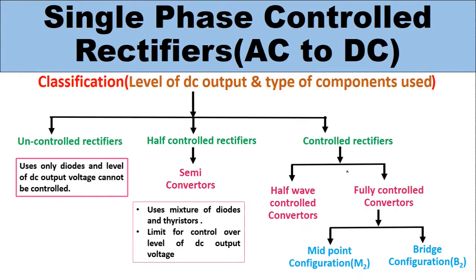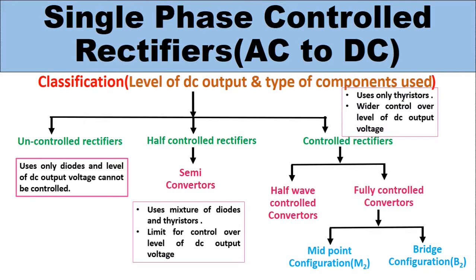Controlled rectifiers are again divided into two categories: first is half wave controlled converters, which we have already discussed, and second is fully controlled rectifiers. In half controlled rectifiers the output signal is controlled for only one half cycle, whereas in fully controlled rectifiers the output is controlled for the full cycle of the AC input signal. Fully controlled rectifiers are divided into midpoint configuration (M2) and bridge configuration (B2). Controlled rectifiers use only thyristors and have wider control over the DC output voltage level.